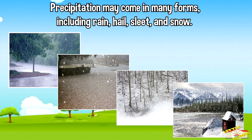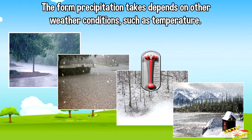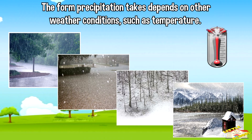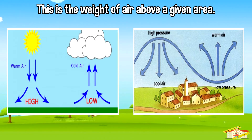The form precipitation takes depends on other weather conditions, such as temperature. A fifth element of weather is atmospheric pressure. This is the weight of air above a given area.